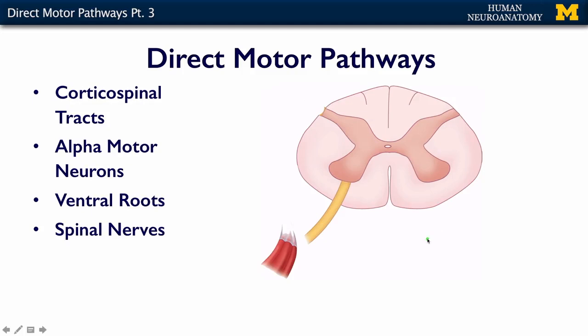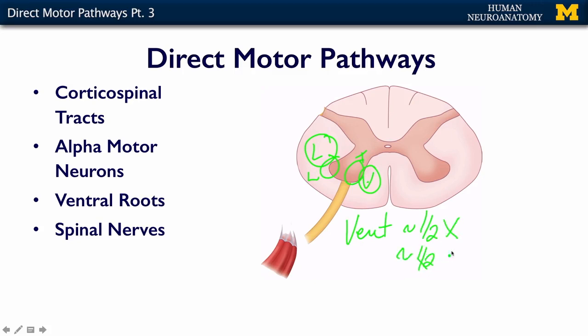One thing to add: because the lateral corticospinal tract is over here and the ventral is here, the trunk neurons are here and limb neurons are here. The ventral corticospinal tract is about half crossed and about half uncrossed. This is because your trunk moves as a whole — I can't do half a sit-up. I can twist, but my whole trunk moves together; I can't move parts of my thorax or abdomen independently. So because you want the trunk to move as a unit, you want information from both sides of your brain talking to both sides of your body.